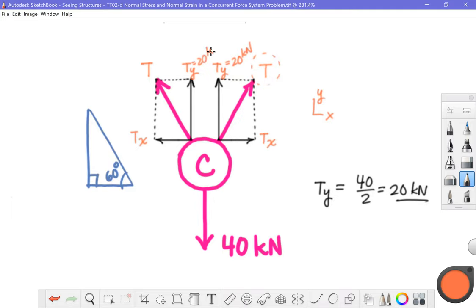Now at this point, the fastest way to solve T is to recognize that both of these TYs are identical, and they sum to 40 newtons. So T sub Y is equal to 40 divided by 2 equals 20 kilonewtons. Let's put that into the diagram. And at this point, I don't even have to solve for T sub X. Now usually when I assign this to students, what they do is next they solve T sub X, and then finally solve T using the Pythagorean theorem.